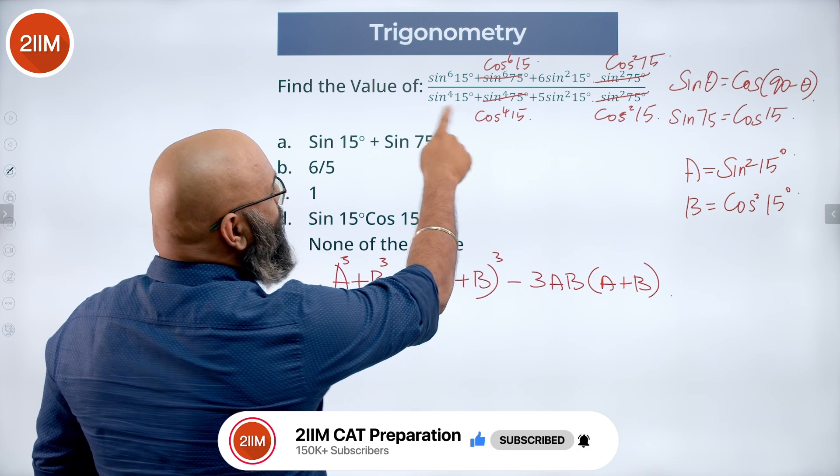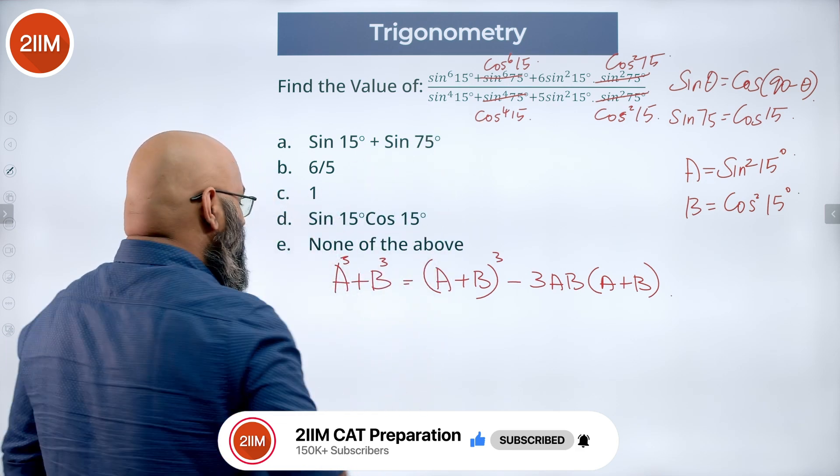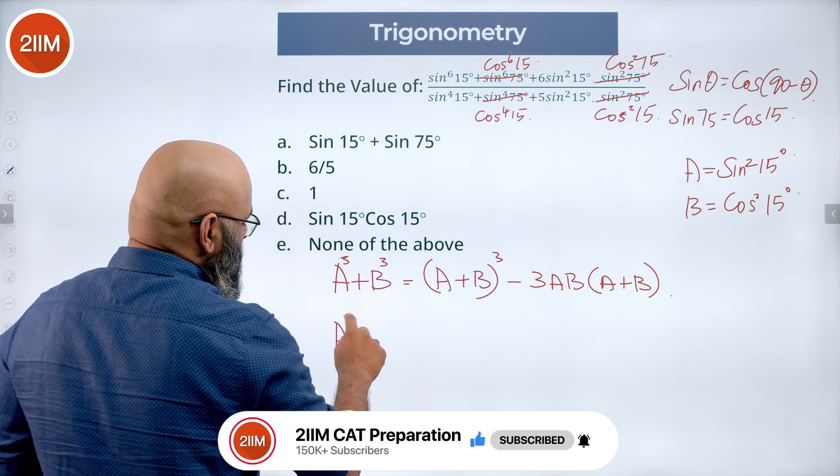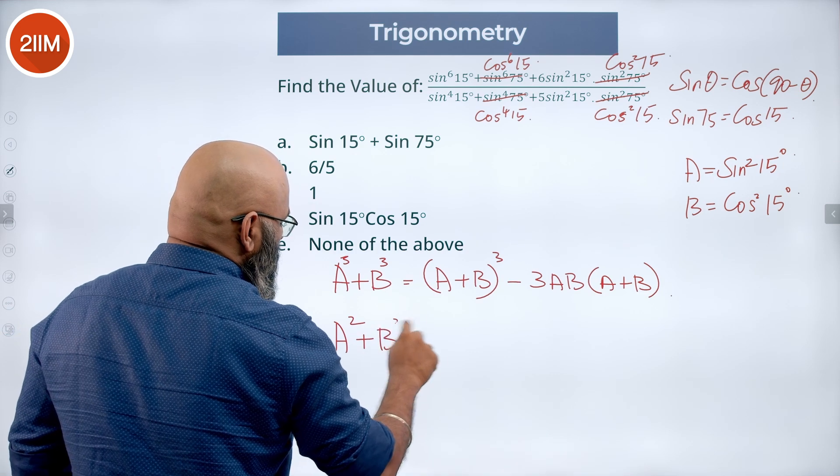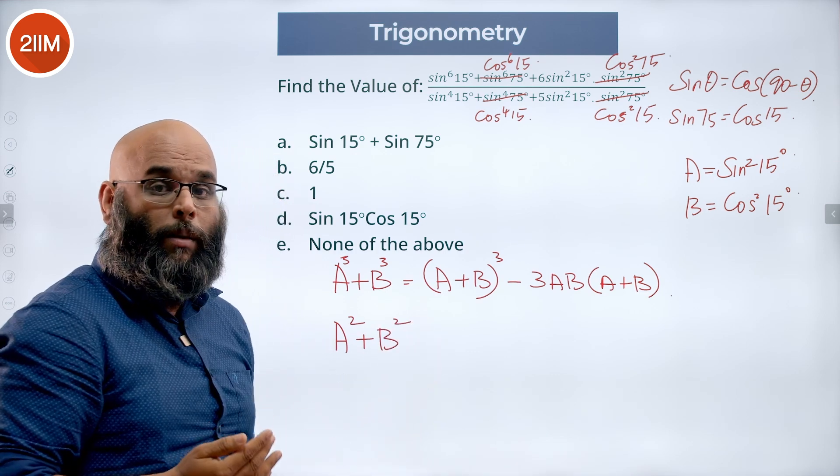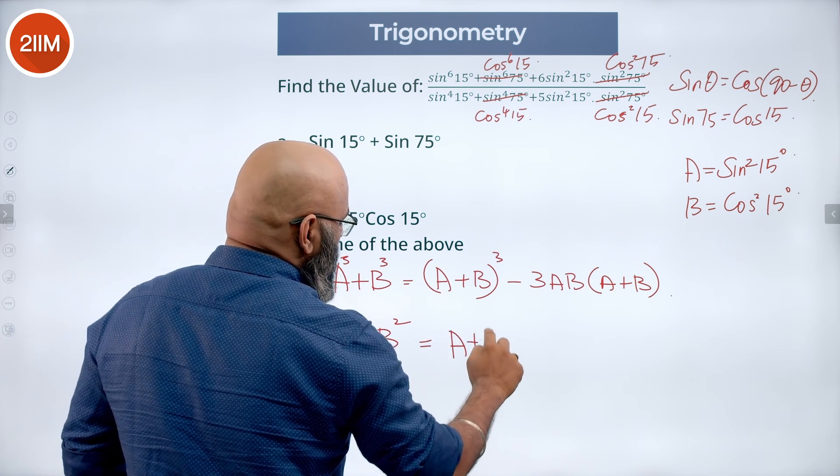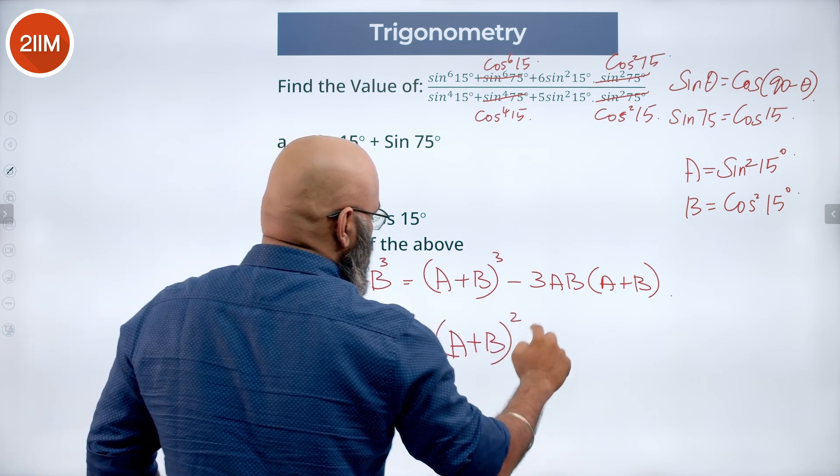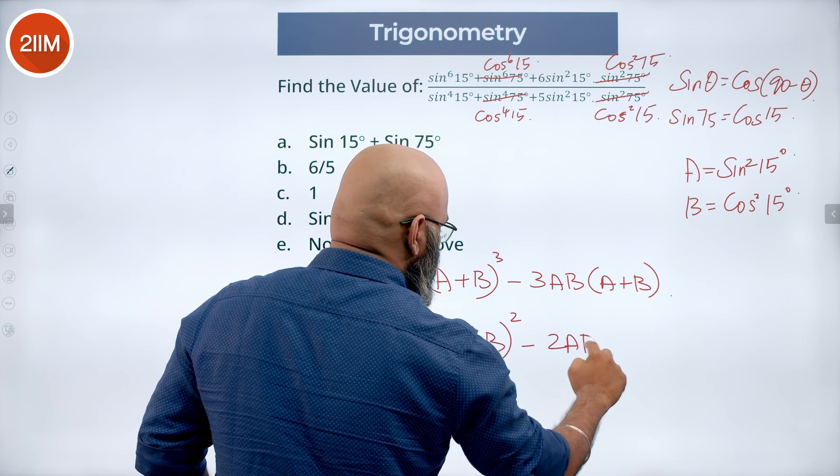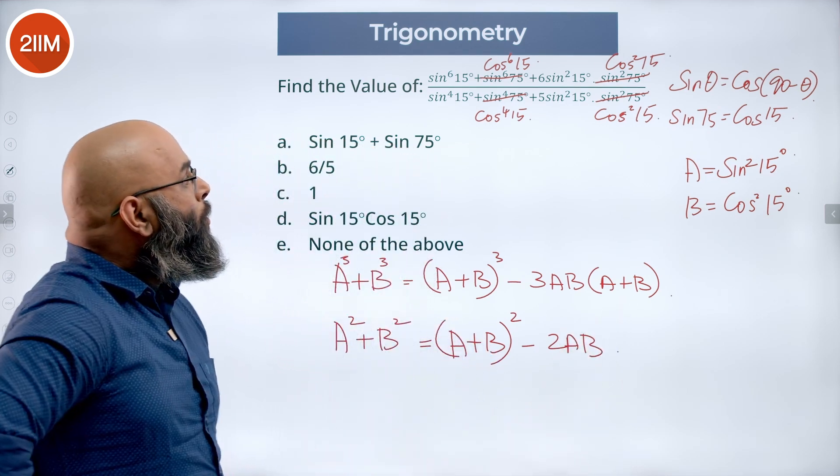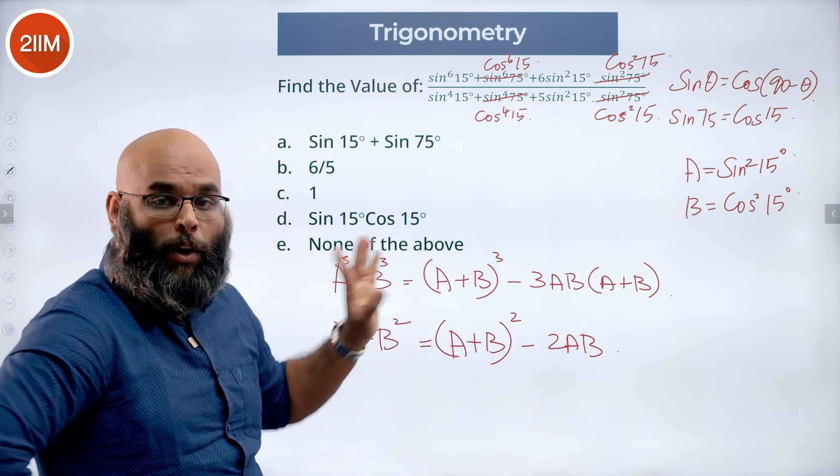Now similarly we have sin power 4 and cos power 4, I can say a square plus b square because sin square 15 the whole square becomes sin power 4. In that case we can rewrite this as a plus b the whole square minus 2ab. So we are going to rewrite this in this format now.